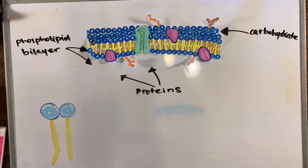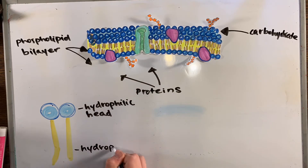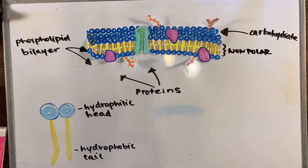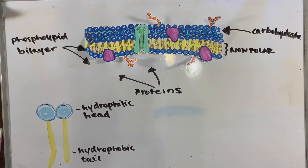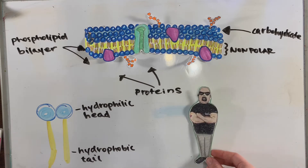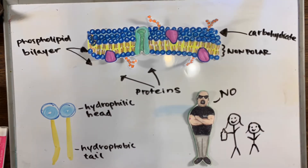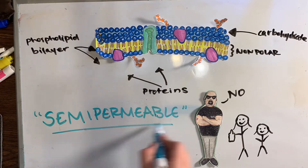A phospholipid is made up of two parts: hydrophilic heads and hydrophobic tails. The heads are polar, so they're attracted to the polar substances surrounding the membrane. When the layers of the membrane are together, the tails face each other, causing the intersection of the membrane to be nonpolar. These regions of polarity and nonpolarity act like a bouncer at a club, letting some molecules in and keeping others out. This property of the cell membrane is called semi-permeability.